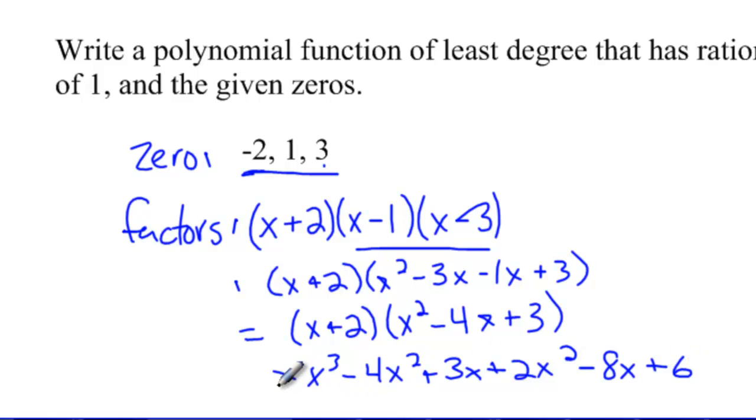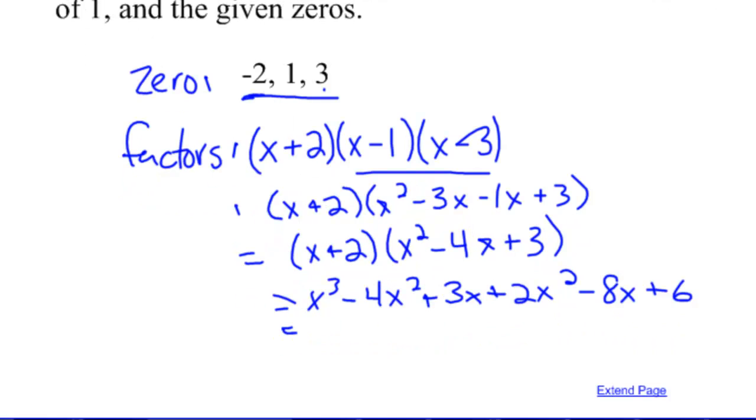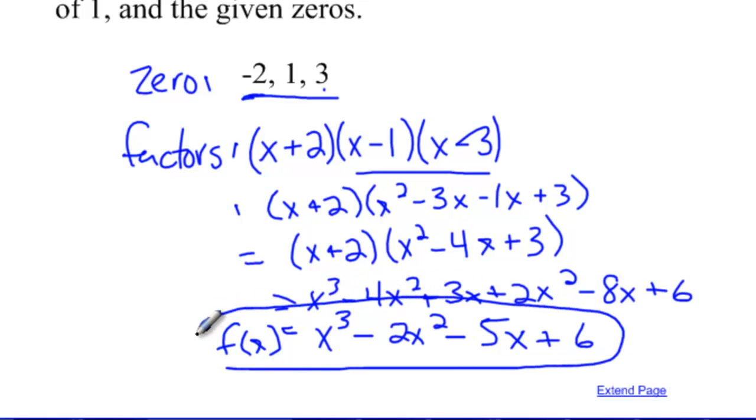And so my final polynomial, let me scroll down here a little bit, is going to be x to the third minus two x squared minus five x plus six. This polynomial, and I'll call it f(x), has those zeros above negative two, one, and three.